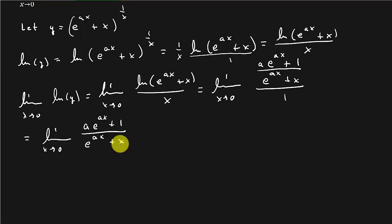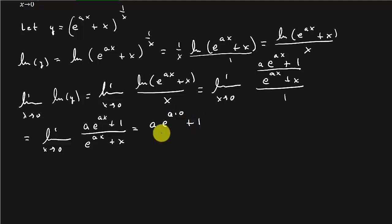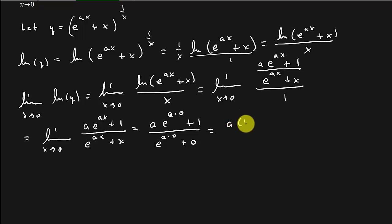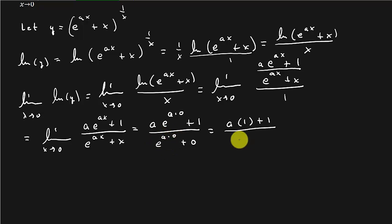So that is equal to the limit as X goes to 0 of AE to the AX plus 1, over E to the AX plus X. Now let's plug in 0: that's A times e to the 0 plus 1, over e to the 0 plus 0, which gives A times 1 plus 1 over 1 plus 0, which equals A plus 1.